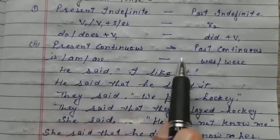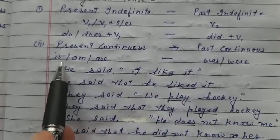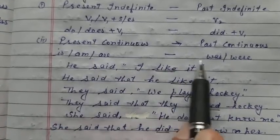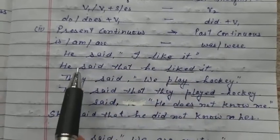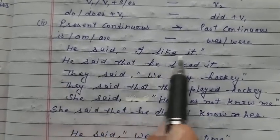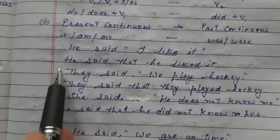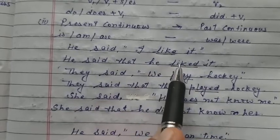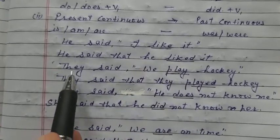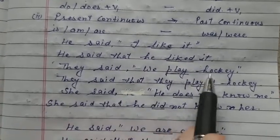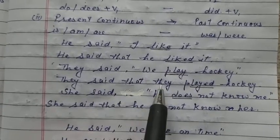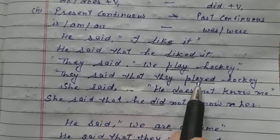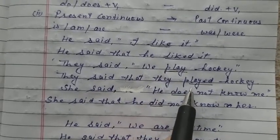Present continuous tense changes into past continuous. Is or are changes into was or were. For example: 'He said I like it' — first form of verb — changes to 'He said that he liked it.' Like (first form) changes into liked (second form). 'They said we play hockey' changes to 'They said that they played hockey.' First form changes into second form, meaning present indefinite changes into past indefinite.